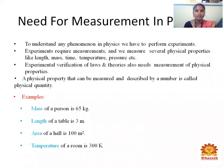First, the Need for Measurement in Physics. To understand any phenomenon in physics, we have to perform experiments. Experiments require measurements, and we have measured several physical properties like length, mass, time, temperature, pressure, etc. Experimental verification of laws and theories also needs measurement of physical properties. A physical property that can be measured and described by a number is called a physical quantity.